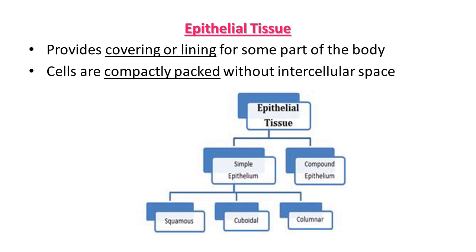Simple epithelium is composed of a single layer of cells and functions as a lining for body cavities. Compound epithelium consists of two or more cell layers and has a protective function, as seen in our skin.